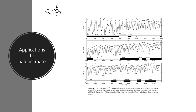Once foraminifera die, they fall to the bottom of the ocean. You can go to the ocean floor, collect them, take tiny pieces of their shells, pass them through a mass spectrometer, and determine the isotopic ratios. From those, you can determine things like the temperature of the ocean when these tiny creatures lived or died.